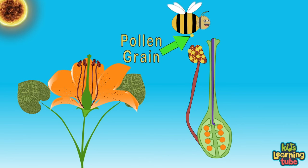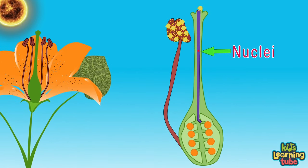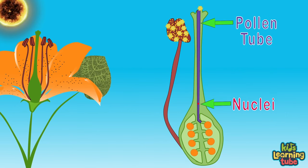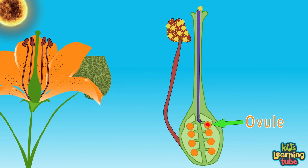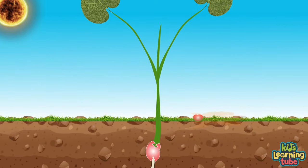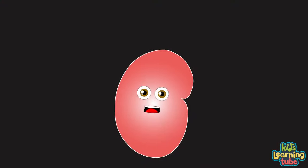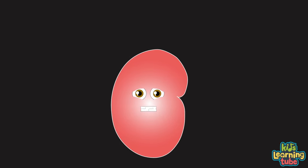When a pollen grain from the anther containing a nuculus reaches the stigma of a flower from a bee passing by, the nuculus runs down the style in the pollen tube until it reaches the ovule of the flower. A nuculus fuses with the ovule creating a new seed, which will fall to the ground starting a new plant cycle. The goal of every plant and every living thing is to create offspring for the next generation — life's a beautiful thing.